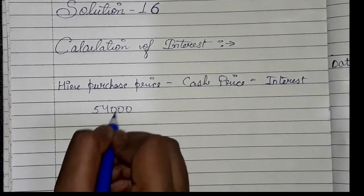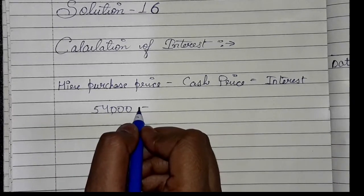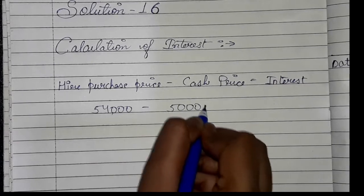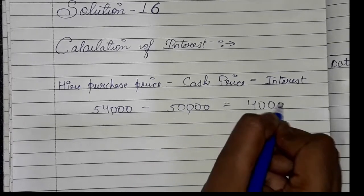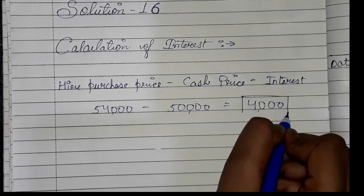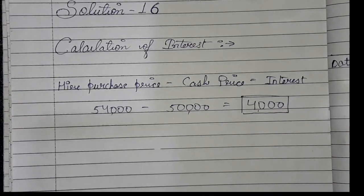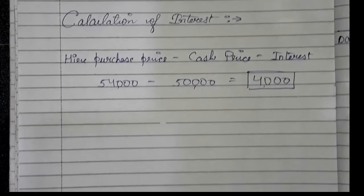In question number 16, we have to find interest by subtracting cash price. We write 50,000, and the total interest comes to 4,000. We have to distribute this 4,000 over 4 years.